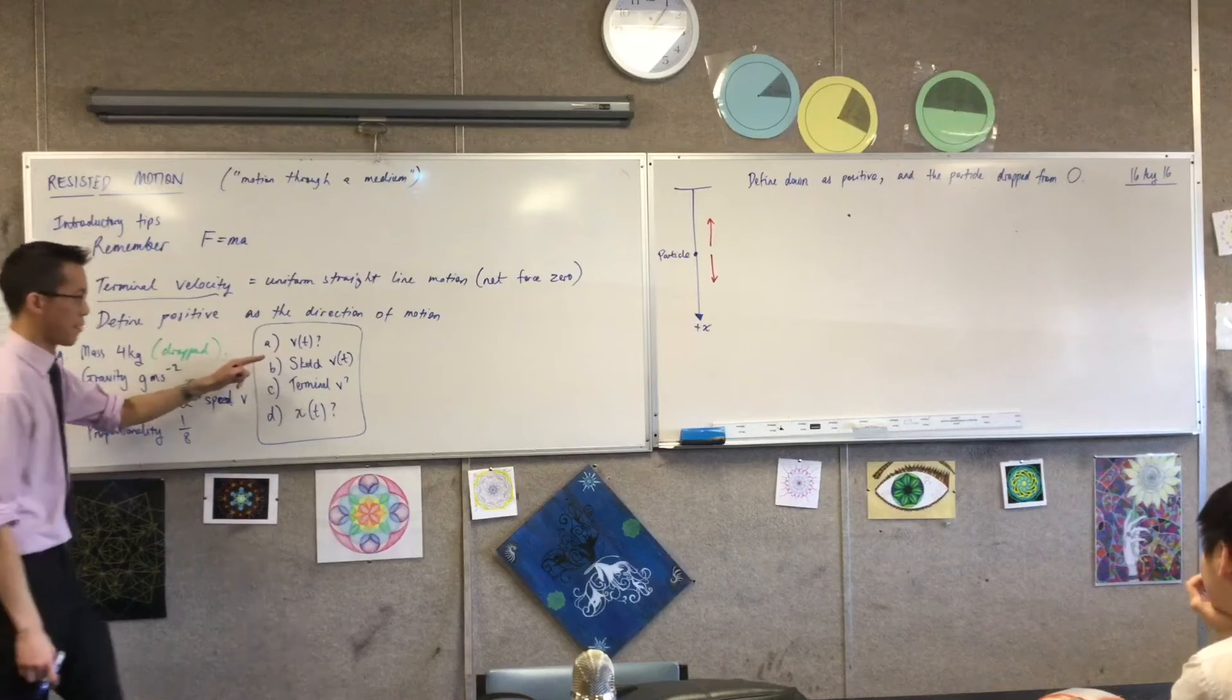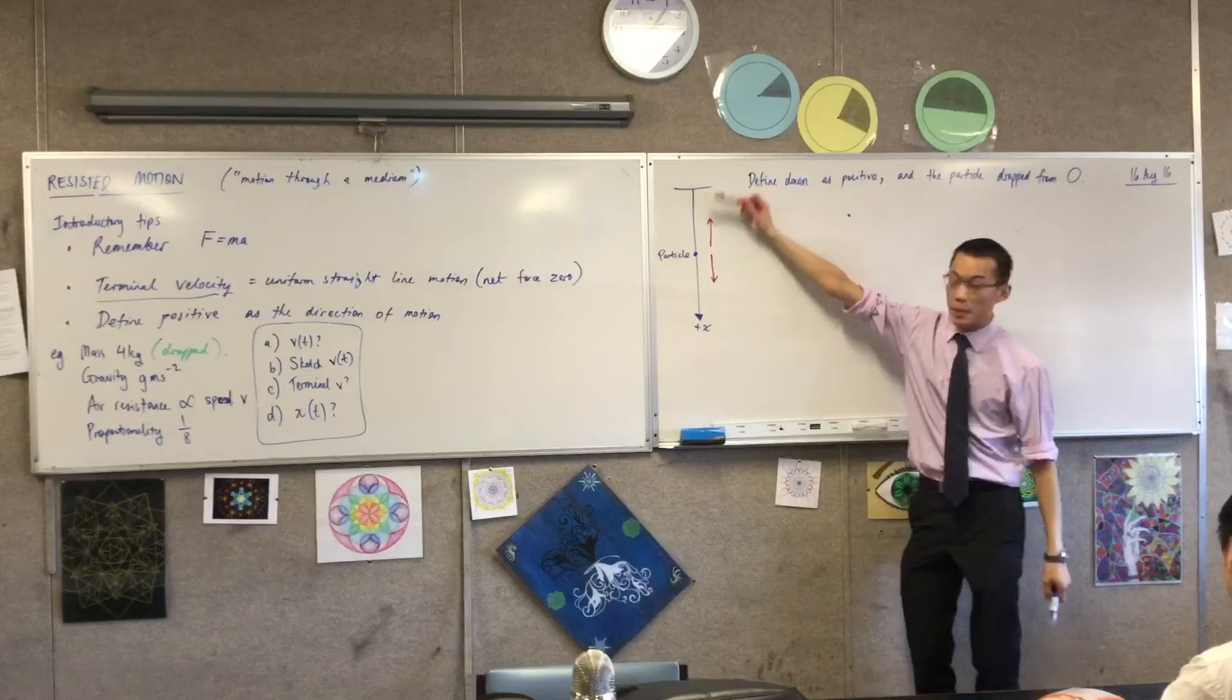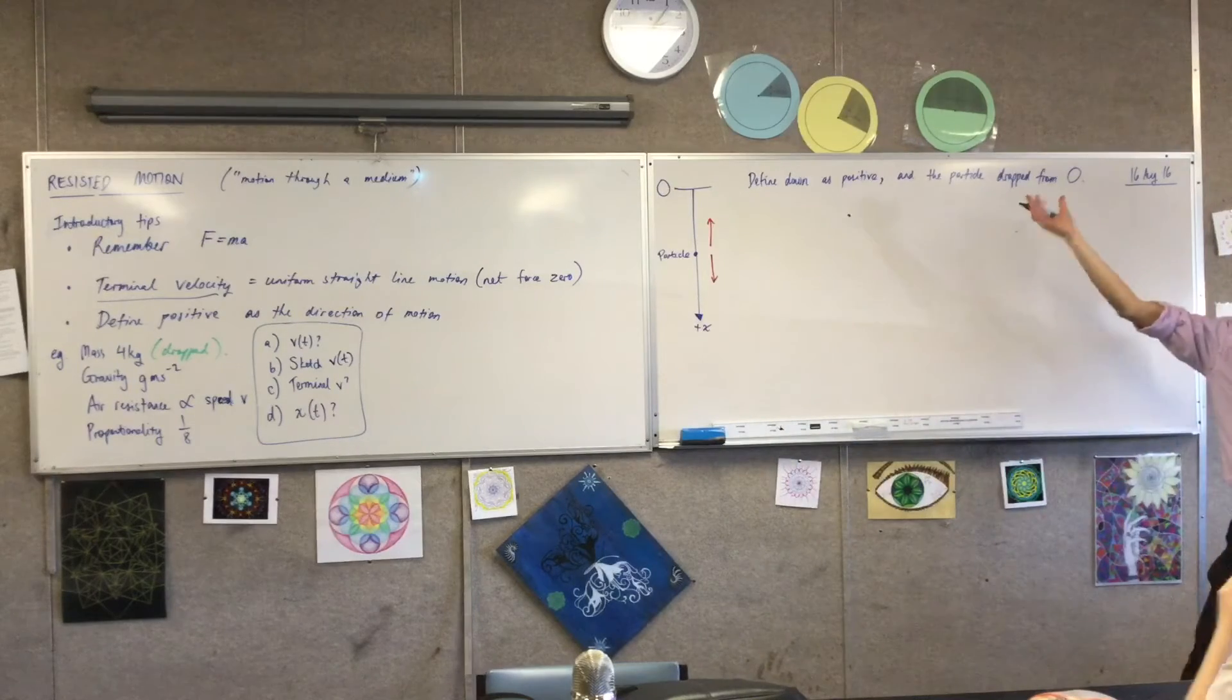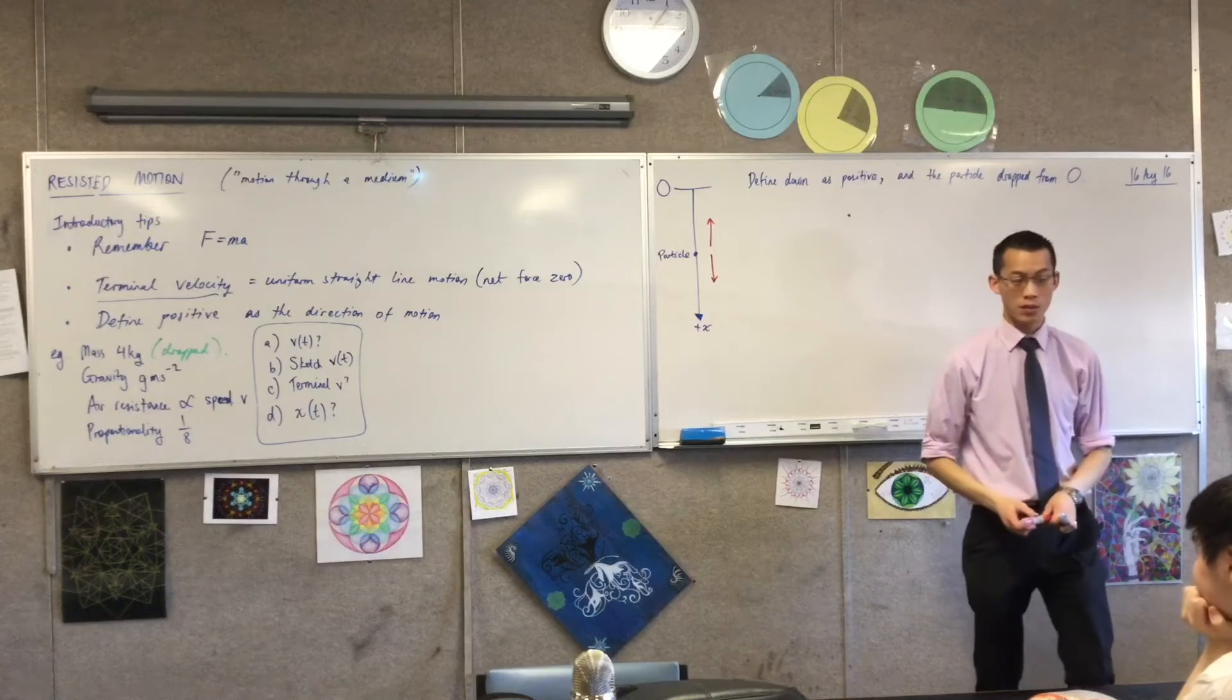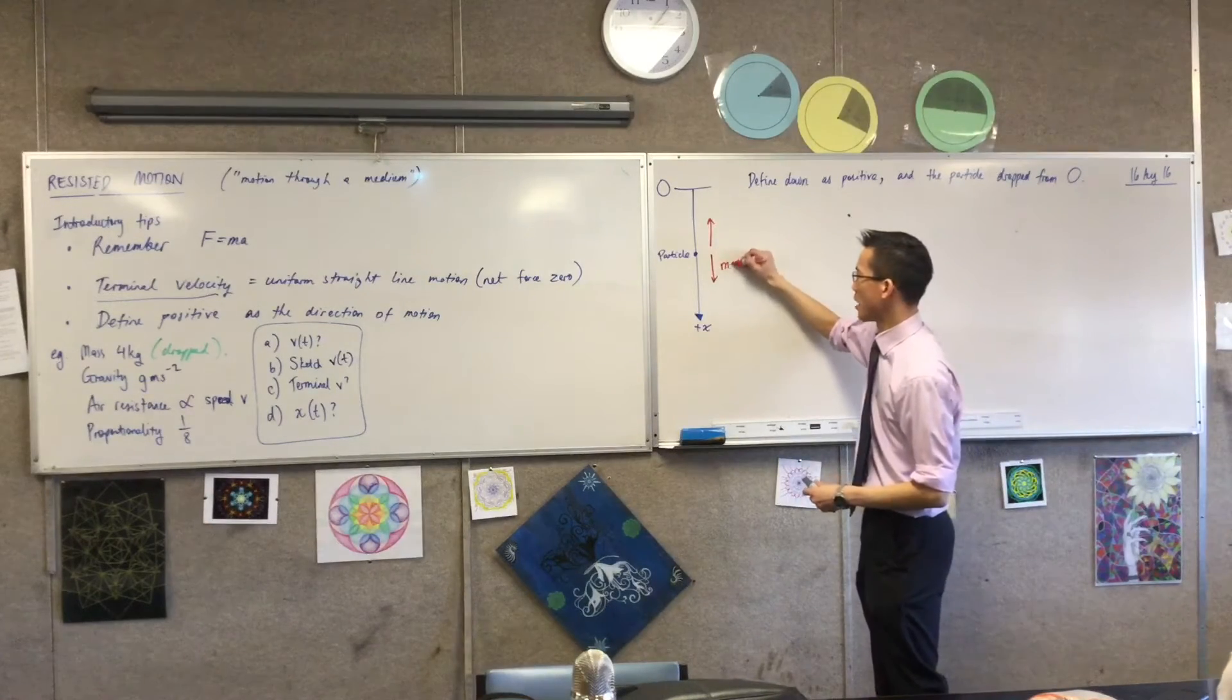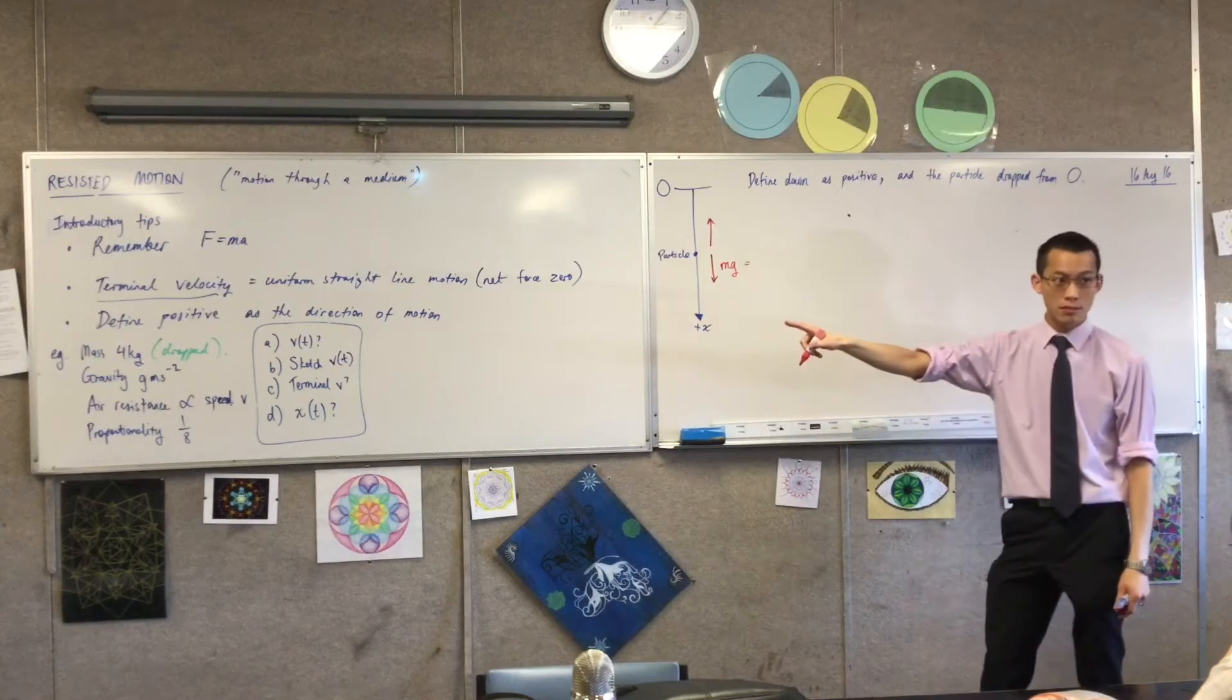Maybe you can sort of guide me through how do we even start this. Now, I'm looking for a velocity time expression function. I haven't finished my diagram yet, but I've made a start. You can see I started from up here. I've defined down as positive and the particle drops from the origin. So this is my starting point up here, O. So here is the particle at a particular instant in time. Now, I have some forces acting. Someone tell me what kind of forces I've got. So gravity, right? Gravity acting downwards.